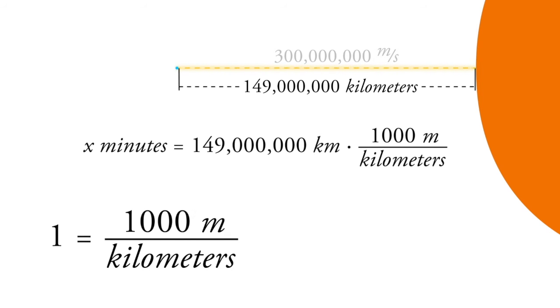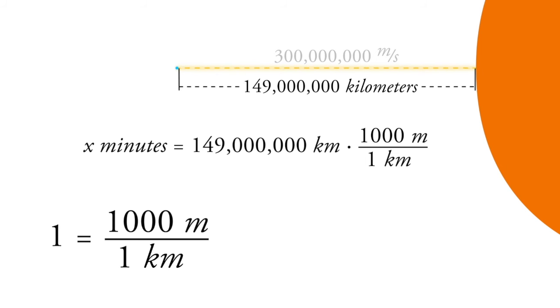And you know there's 1,000 meters per every one kilometer. And so just temporarily, we'll just ghost out these two kilometer labels here. All right, then we're going to wind up with something in meters, but we still need to turn it into time.